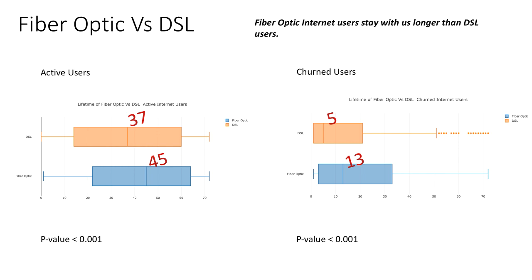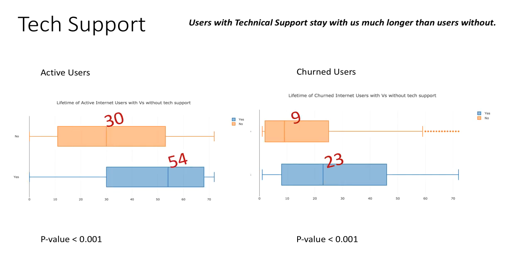Like I mentioned before, our internet users have two types of services: fiber optic and DSL. The goal of this slide is to compare the lifetime of users with different types of internet services — perhaps users of a specific type tend to churn sooner than the rest. In this case, we find that our users with the fiber optic internet service stay with us longer than our DSL users. For our internet users, we give them an option to opt-in or opt-out of technical support. I thought this might have an impact on customer tenure, and I find that users with tech support stay much longer than those without.